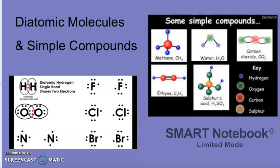What about diatomic molecules? There are several non-metals - hydrogen, oxygen, nitrogen, fluorine, chlorine, bromine - that actually make bonds with themselves.